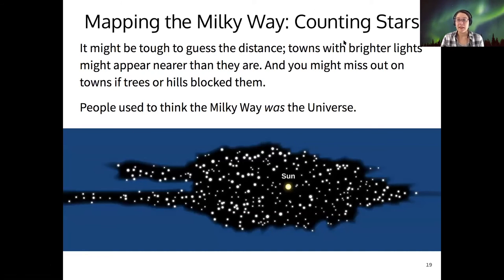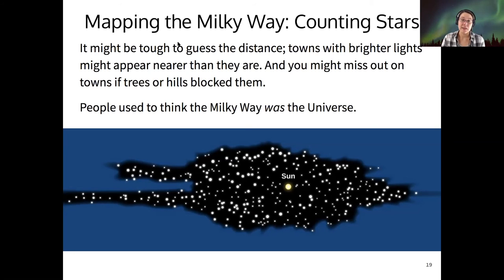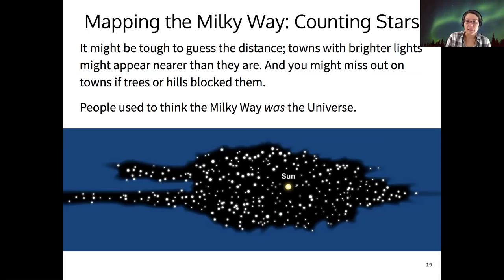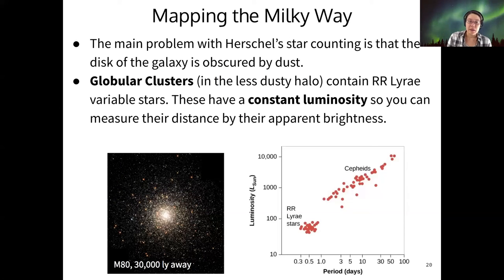Those are the kinds of fundamental errors the star-counting method is prone to. You might be wrong about the distance of towns, because towns with brighter lights might appear nearer than they actually are. You might miss out on things if they're being blocked. It's worth remembering that people used to think the Milky Way galaxy was the entire universe — this was the only galaxy, this was everything, and we lived in a very small place. One of the big problems is the idea of hills or trees being in the way of the towns.